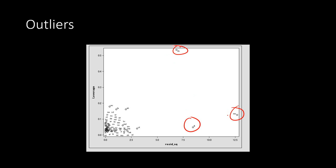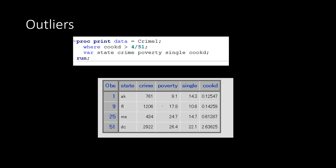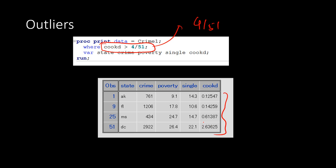When we run the code we can clearly visualize the outliers in the leverage plot. The thumb rule for Cook's distance is that if the value is greater than 4 divided by 51, the observation is considered an outlier. We found four observations meeting this criterion, so four observations are supposedly outliers requiring some treatment before being used in the estimation process.